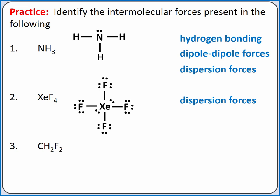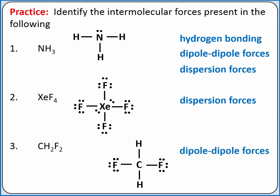For CH2F2, we'll start with our Lewis structure. Since our hydrogen atoms are not directly bonded to the fluorine atoms, we do not have hydrogen bonding. However, since it is a polar molecule, we do have dipole-dipole forces. And of course, we also have dispersion forces.